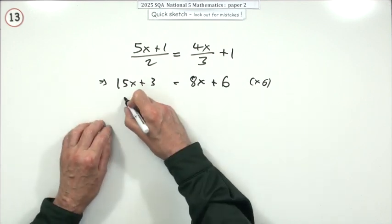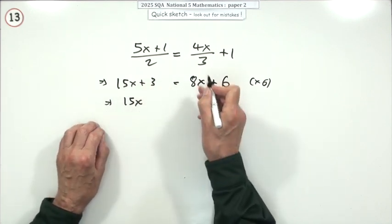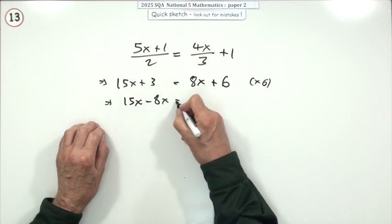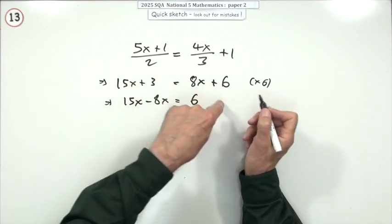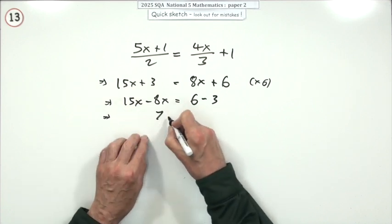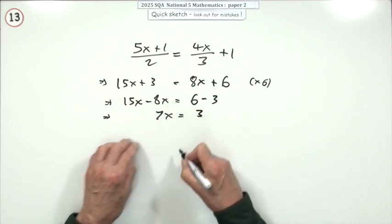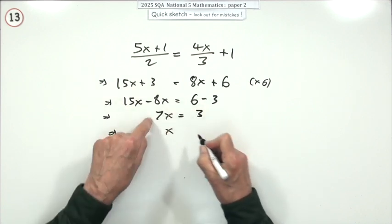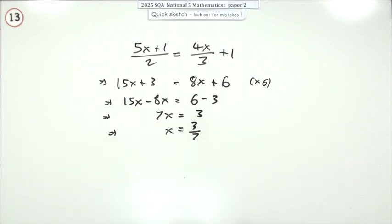Right, now just shuffle it about as normal. So 15x, bring the 8x over to join it. Leave the 6, bring the 3 over to join it. Tidy that up. That'll be 7x, and that'll be 3, which means finally, take that 7 across and divide, 3 sevenths.